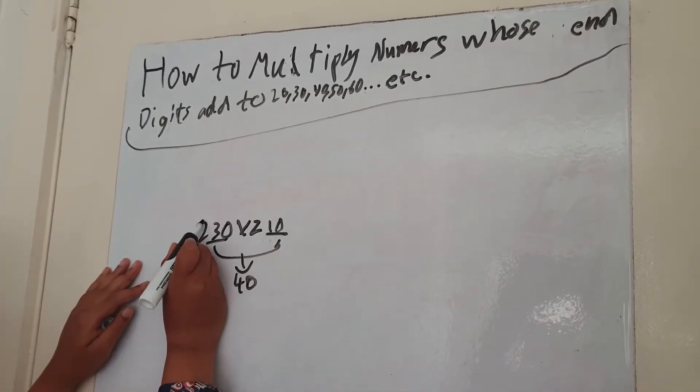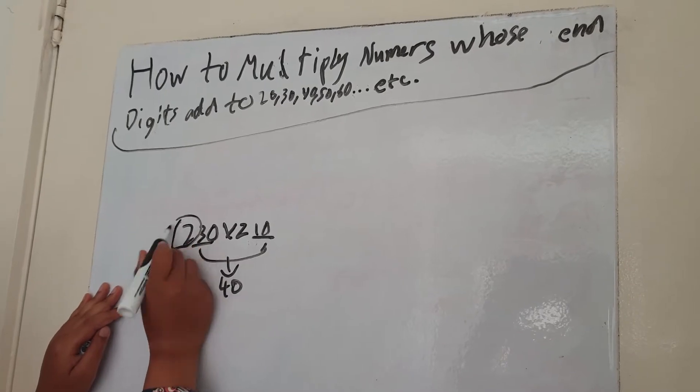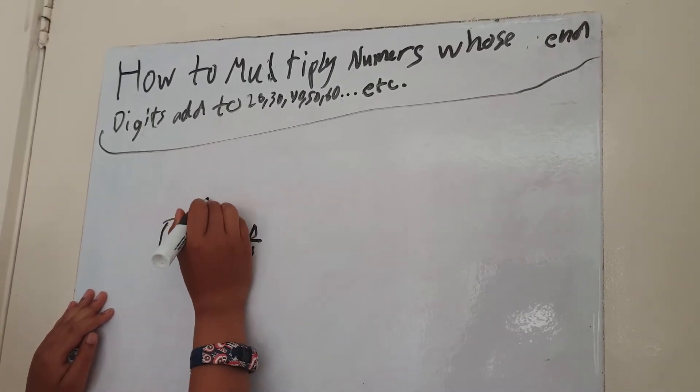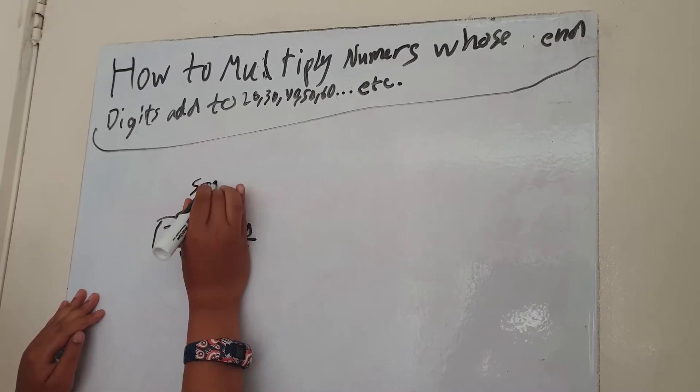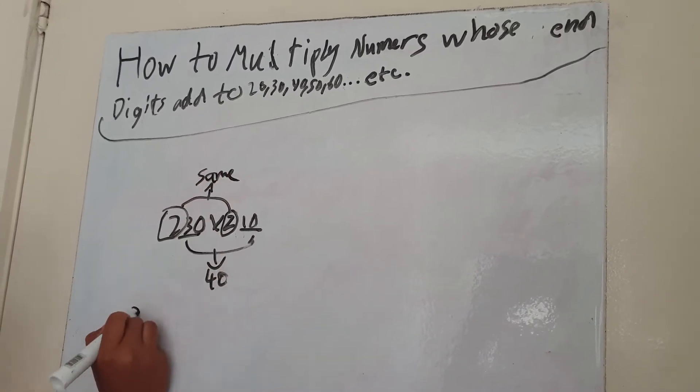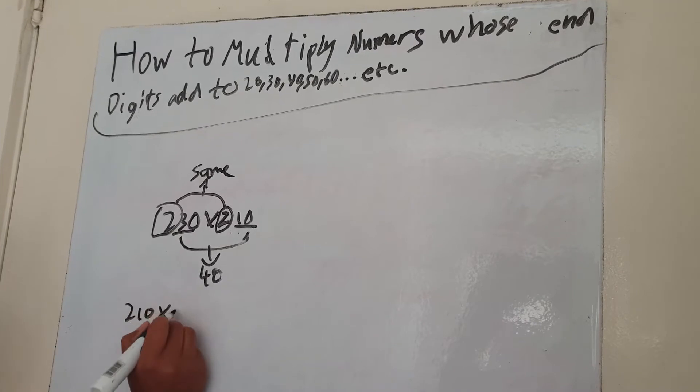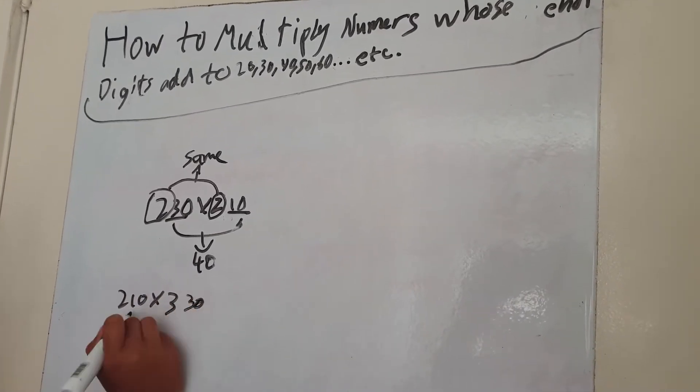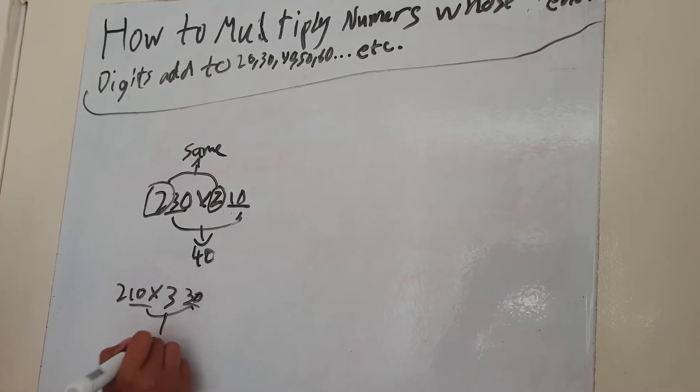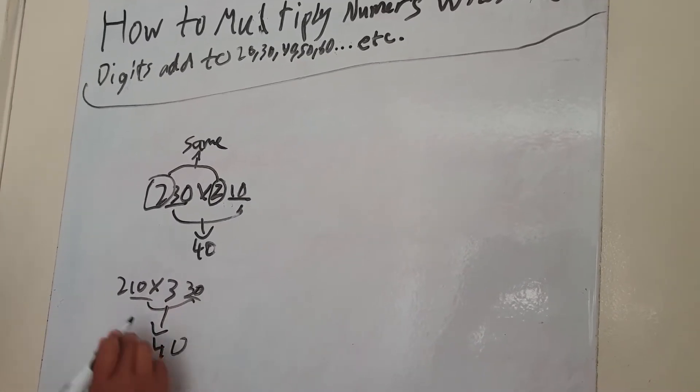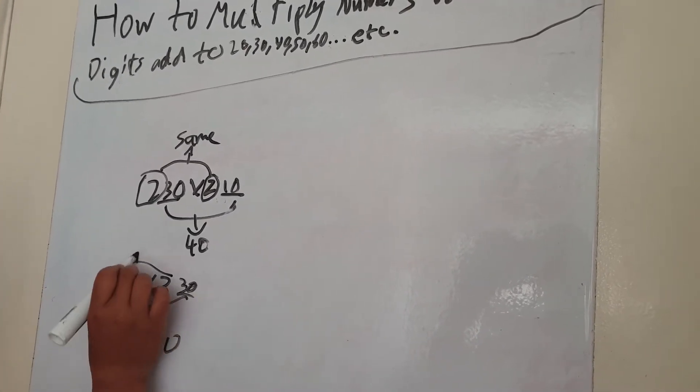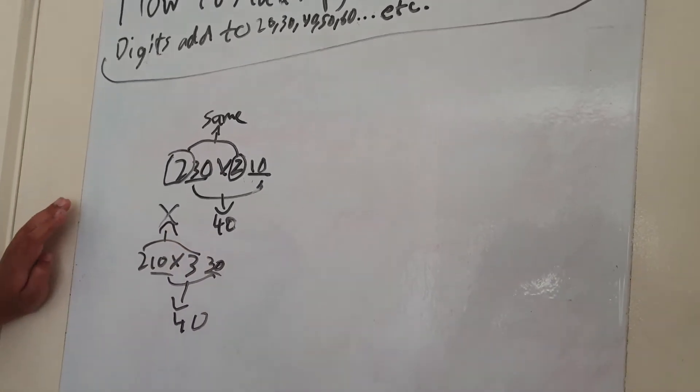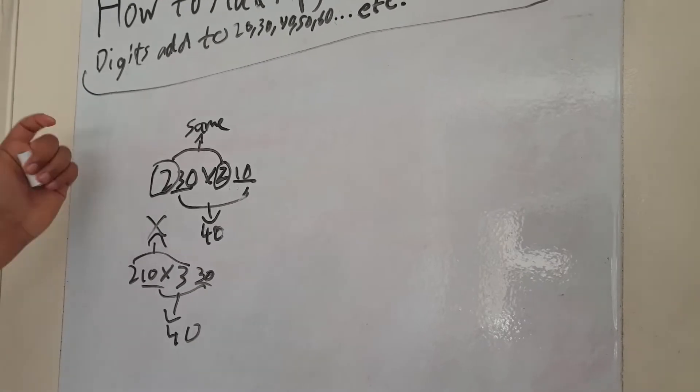And another thing is the first part of the number, so everything except the two digits at the end, the first half have to be the same. So for example, it can't be 210 times 330. Even though these two add up to 40, these two are not the same.